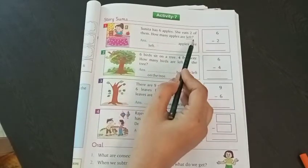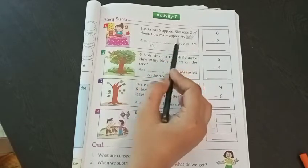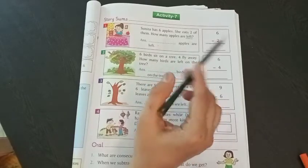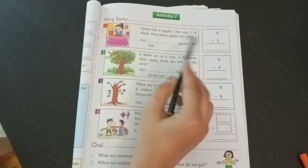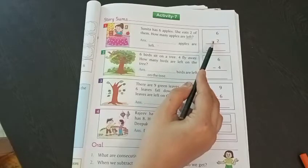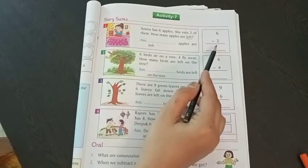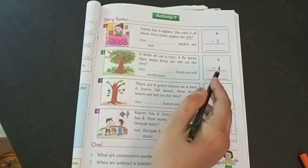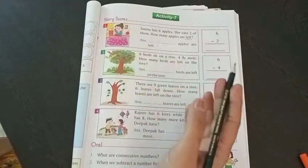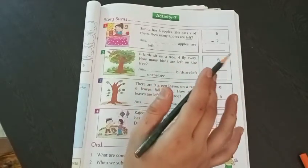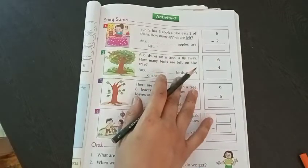You don't try to understand what is given in the question. You just write the numbers. You write 6, the first number, then the second number. Left, so subtraction sign minus. 6 minus 2 is 4. That's all. The sum is over. In each and every sum, you don't read it. You only pick the numbers, look for the keyword and then do minus or addition.